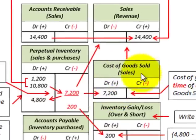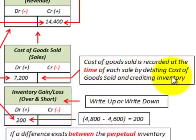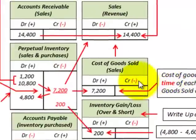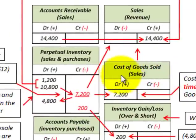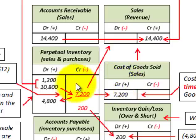For the cost of goods sold account, COGS is recorded at the time each sale is made by debiting cost of goods sold and crediting inventory. With this perpetual inventory system, we're constantly updating our inventory account and cost of goods sold — for each sale, we recognize a COGS and a reduction in inventory.